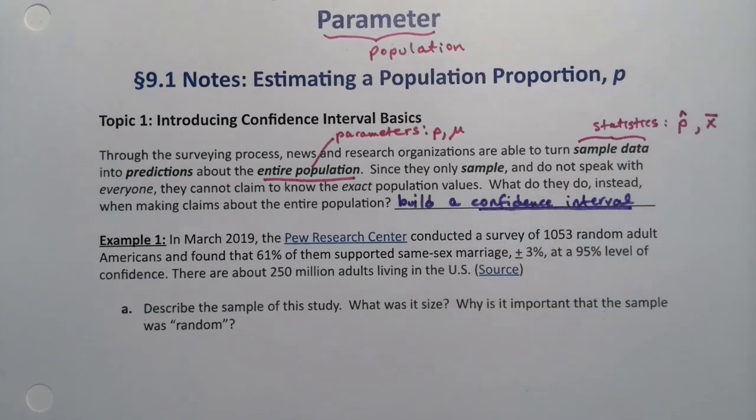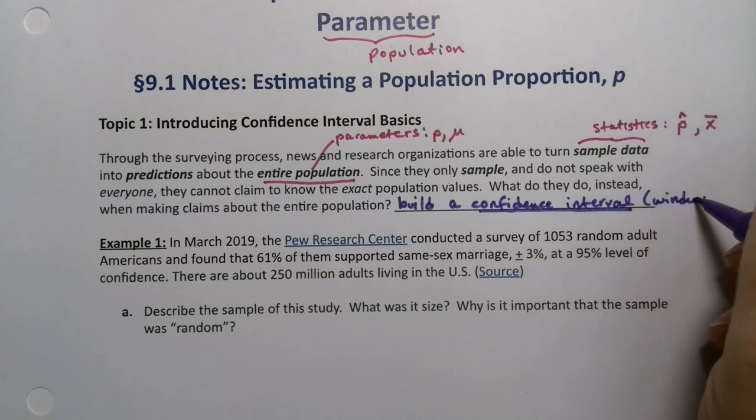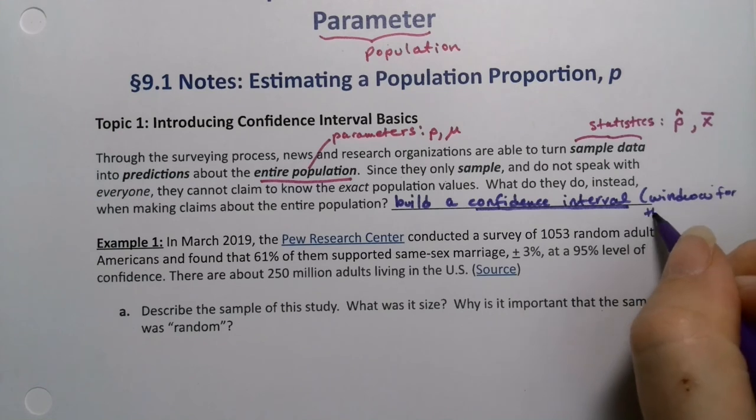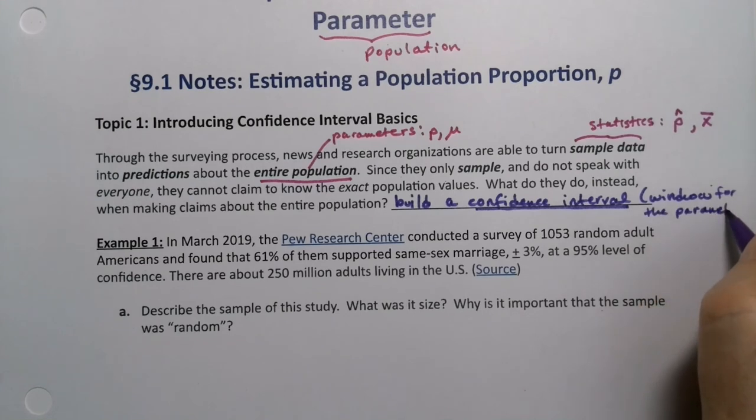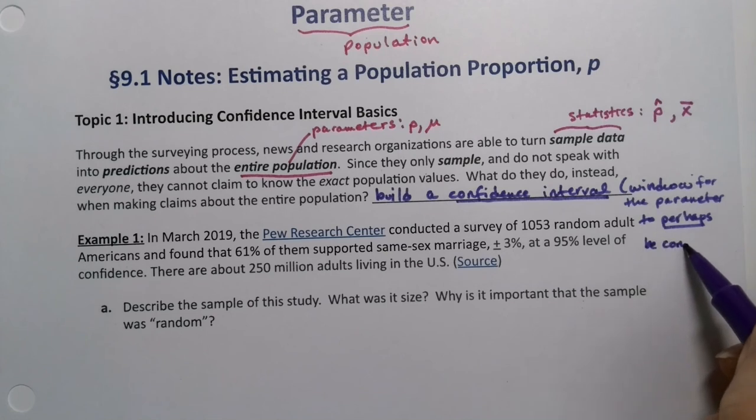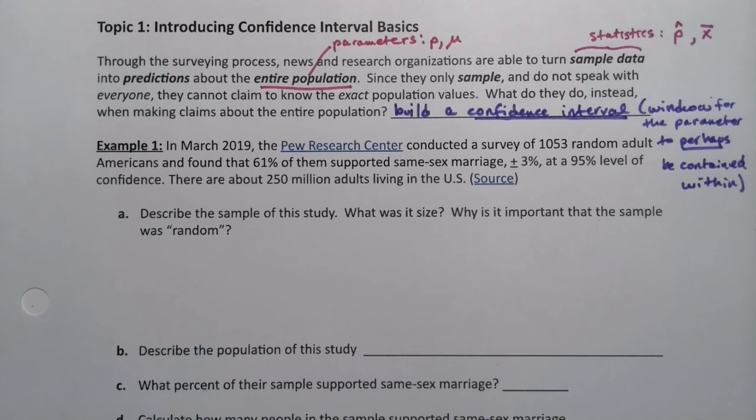Which is what we're working with in this particular section. So they're going to build a window that they think the parameter is going to fall in. We don't know because we've learned in statistics we don't really know anything, we just make educated guesses. Let's see how this works in practice.